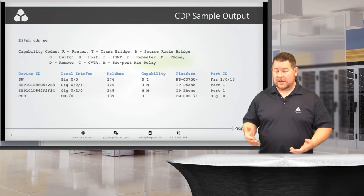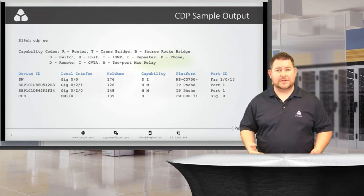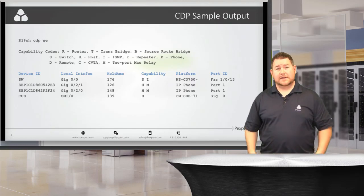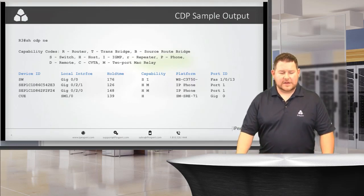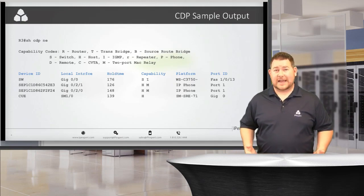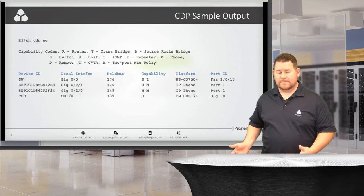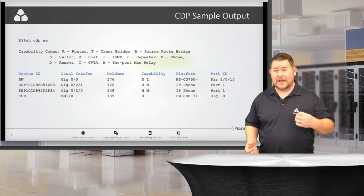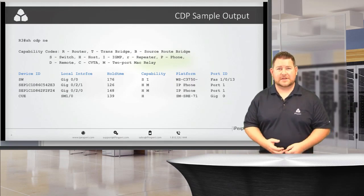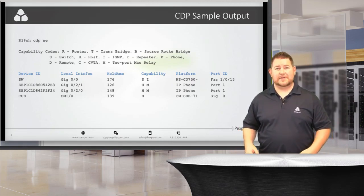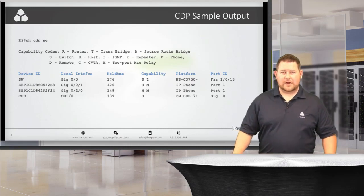Remember the phone has a couple of ports: the port connecting into the switch, and also a port that can connect to a PC, which we'll need to account for with VLAN assignment and QoS. CDP is useful for mapping out your network. These advertisements come from the phone itself every 60 seconds, and there's a hold time of 180 seconds — so if three advertisements are missed in a row, that CDP neighbor is considered gone.